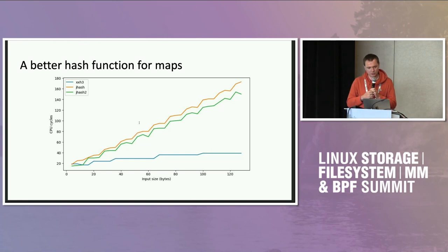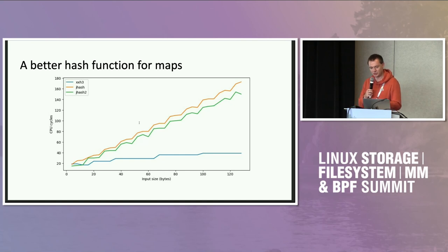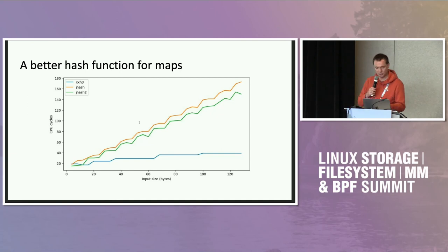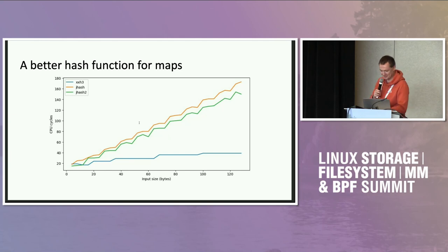This plot compares jhash, jhash2, and xxh3 hash functions. We can see that xxh3 wins for most key sizes. Besides that, it's not evident what's happening for very small keys — and it happens that, for example, Facilium were primarily interested in those small keys.